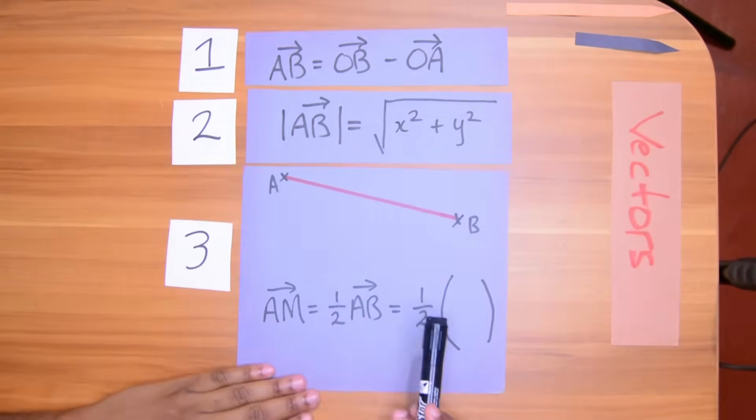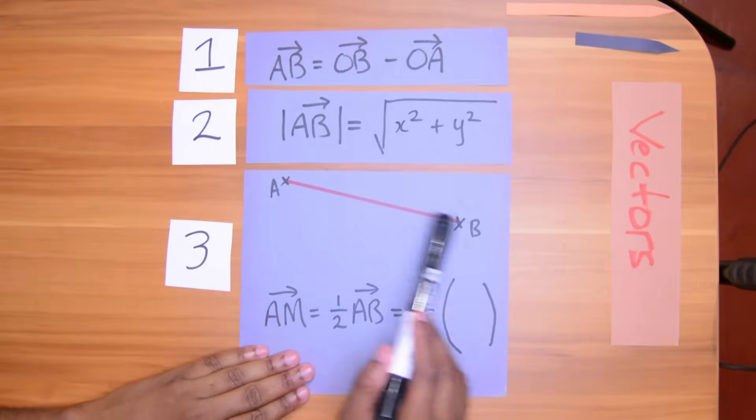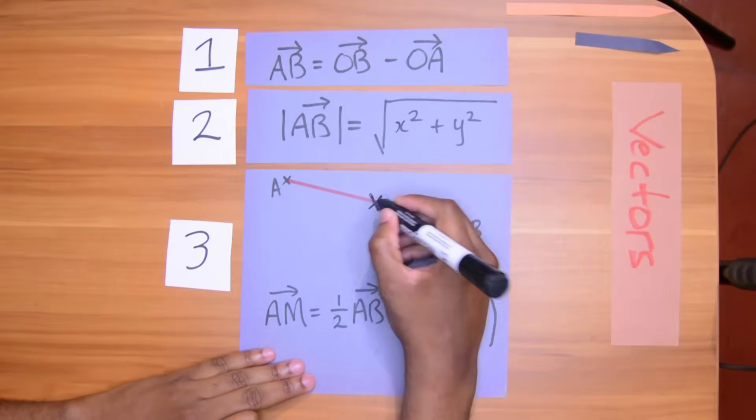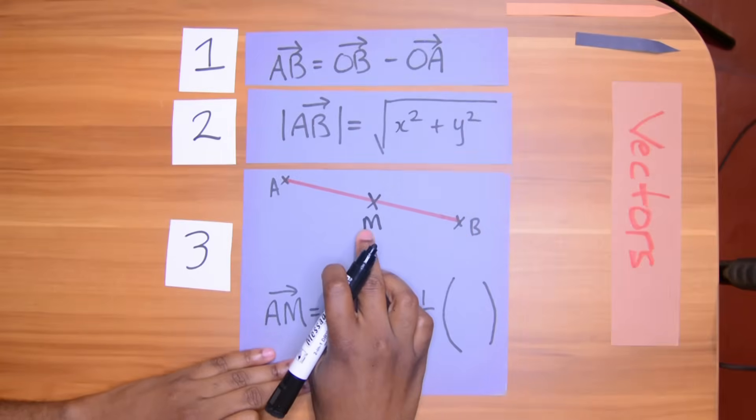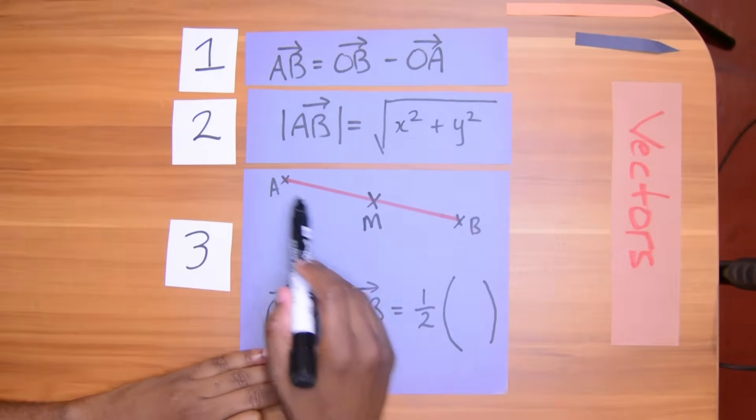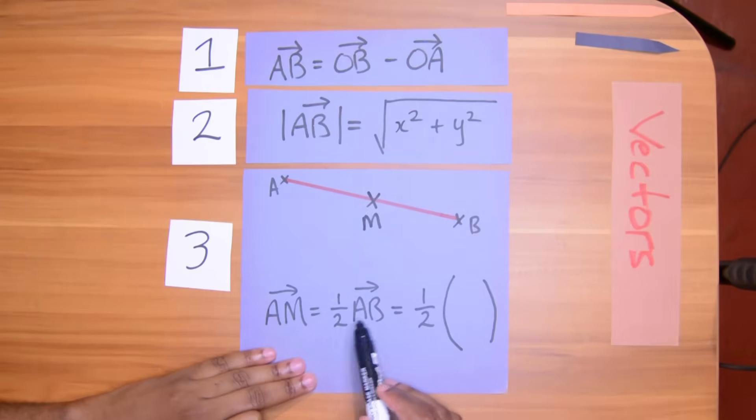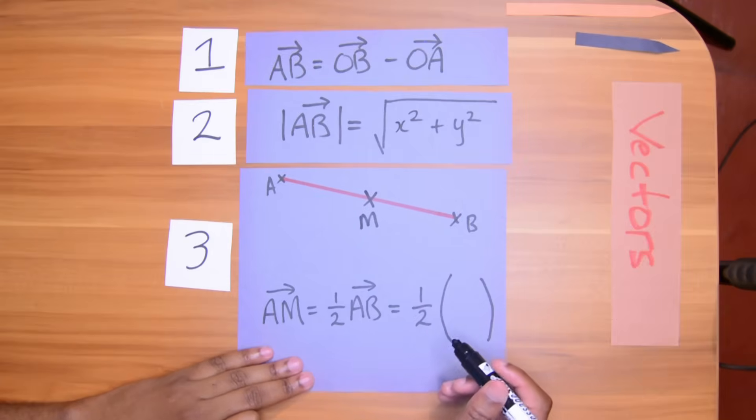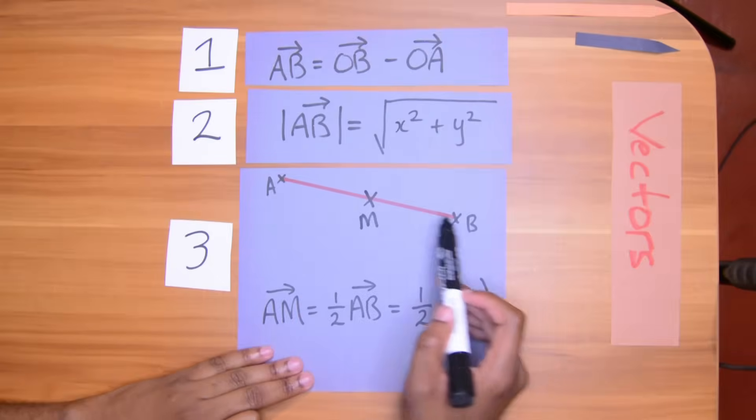The third rule I want to introduce you to is just a little concept. Say we have AB as a vector and we want to find a midpoint and this is common. Sometimes they'll ask you for a midpoint or they'll ask you for a one-third of the way along the vector, but let's use midpoint. So I want AM. AM is simply half of AB. It sounds simple, right? But in the exam sometimes you wouldn't figure it out.